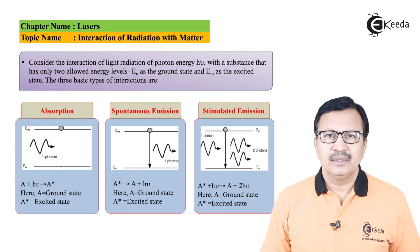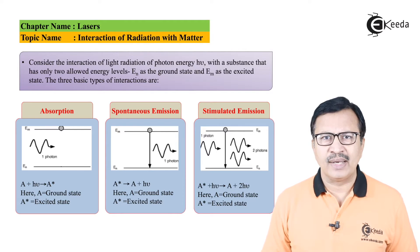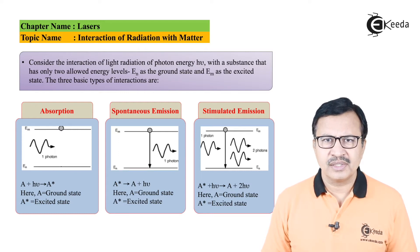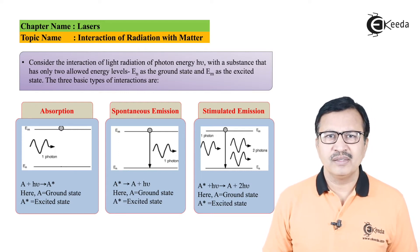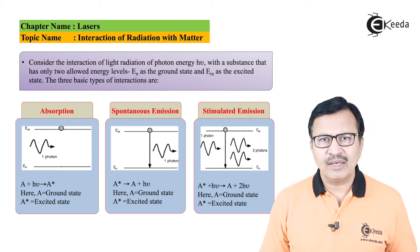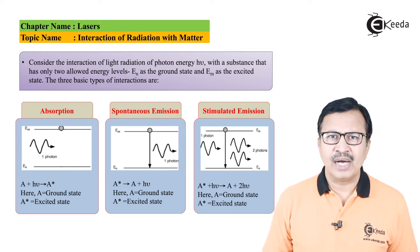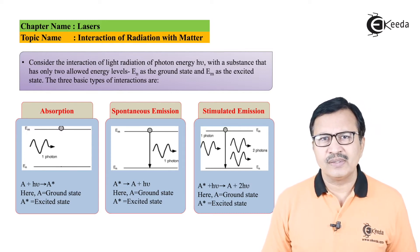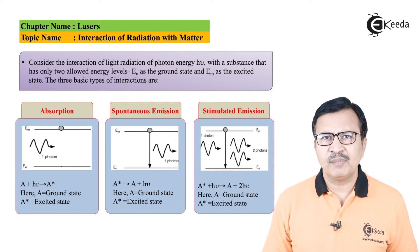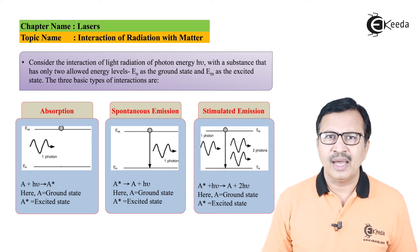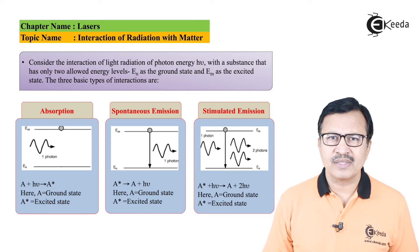Consider the interaction of a photon of energy hν with matter. Matter can be atoms which are in certain energy states, but for simplicity we are going to consider a pack of atoms which are having only two energy levels: a ground state which is represented by En and an excited state which is represented by Em.